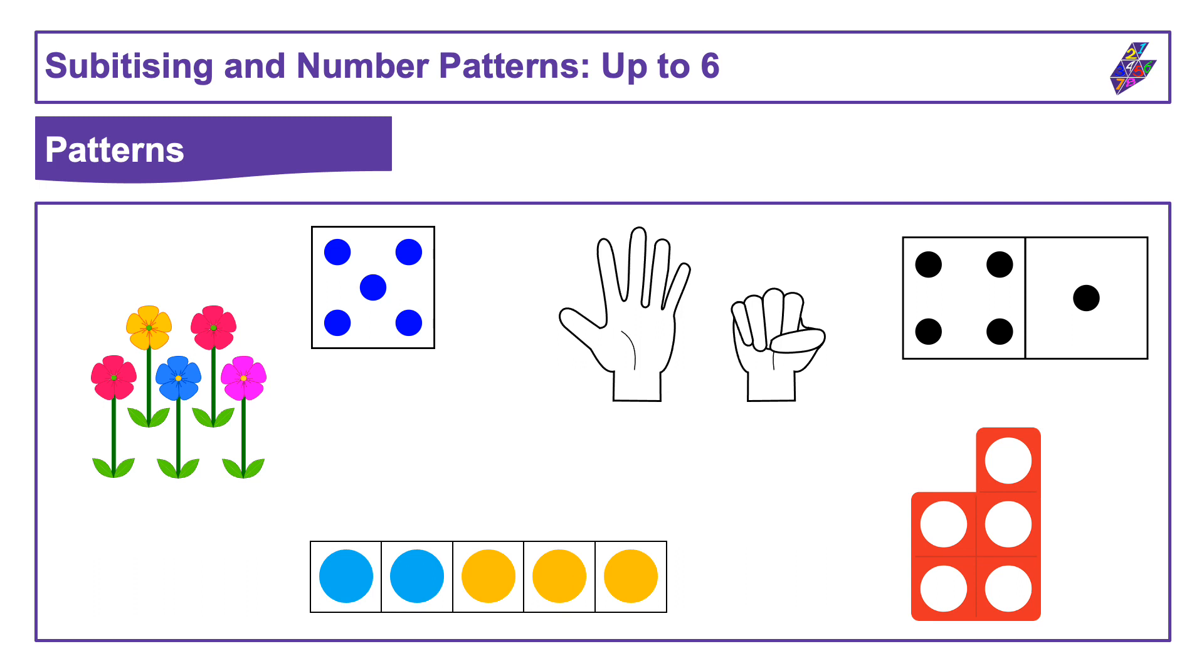Another thing you might have noticed is that even though all the pictures look a bit different, if you count up the total number of dots, circles, flowers, or fingers on each item, the total is always five.